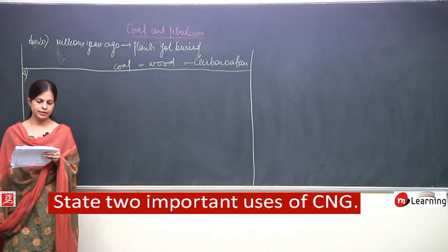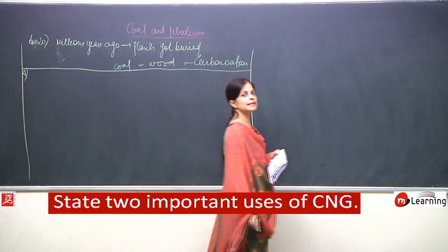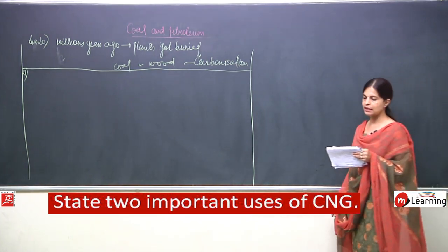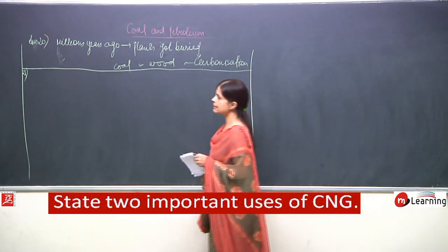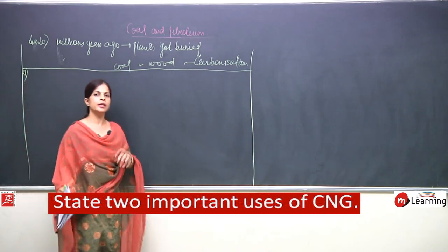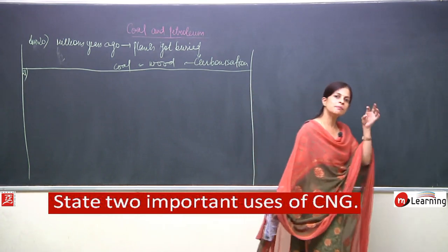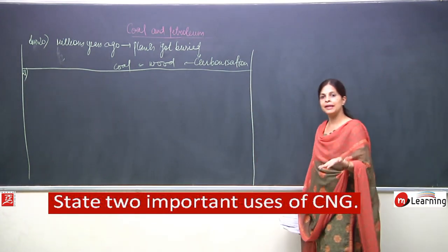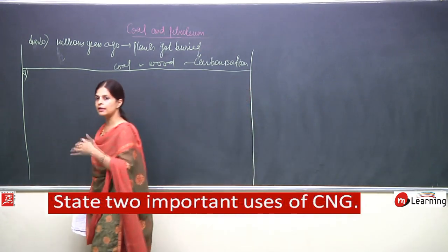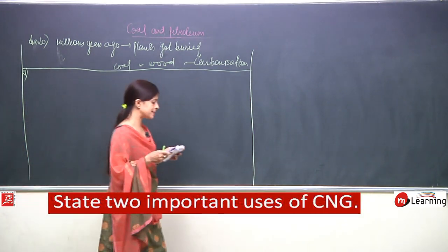Question number 21: state two important uses of CNG. CNG is compressed natural gas. Methane is present in CNG. It is formed due to the decomposition of vegetables under water. Now we can proceed to the question itself.